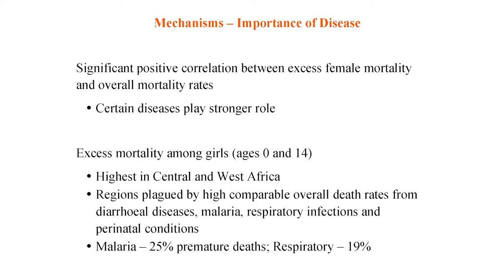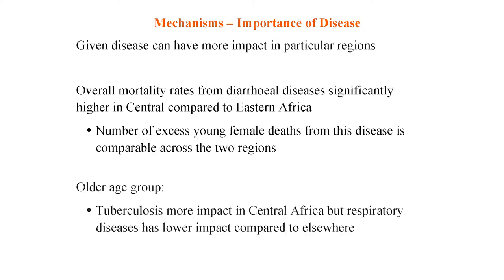Excess mortality amongst young girls aged 0 to 14 is highest in Central and West Africa, which are plagued by high overall death rates from diarrhea-related diseases, malaria, respiratory infection, and perinatal conditions. Overall death rates were comparable across these four causes, but it was malaria that caused the most excess female mortality, and secondly respiratory infection. Certain diseases have more of a role, and a disease can have a different effect by region — for example, overall mortality from diarrhea is significantly higher in Central Africa than East Africa, but the excess female deaths from both areas are comparable. Tuberculosis had a bigger impact in Central Africa, but respiratory diseases had a lower impact compared to other areas.